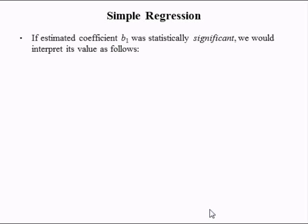If the estimated coefficient B1 were statistically significant, we would interpret its value as follows. B1 is rise over run — the rise being the change in the employment population ratio, and the run being the change in the welfare check paid to low-income single mothers. B1 was found to be negative 0.0025. We can rewrite that as negative 0.0025 over positive 1, which makes interpreting the slope coefficient easier.